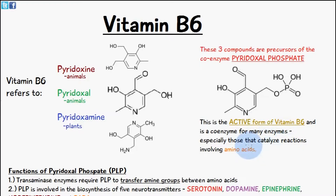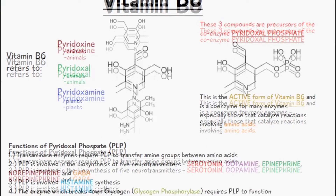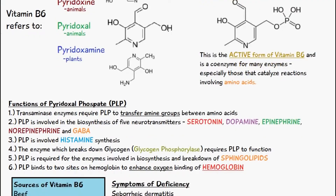It's especially common in reactions involving amino acids. Pyridoxine and pyridoxal you'll find in animal products, and pyridoxamine you'll find from plant products. So let's talk about the functions of this pyridoxal phosphate.